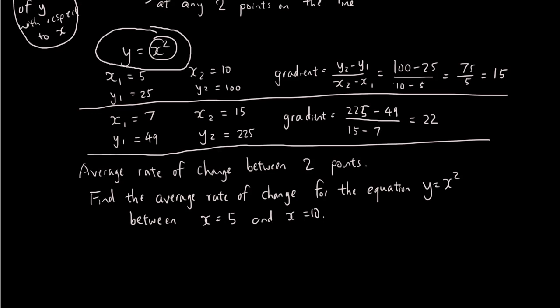Then what you can do is you can say the rate of change equals change in y over change in x, which is 75 over 5, which is 15. So we've done all the work already up here.